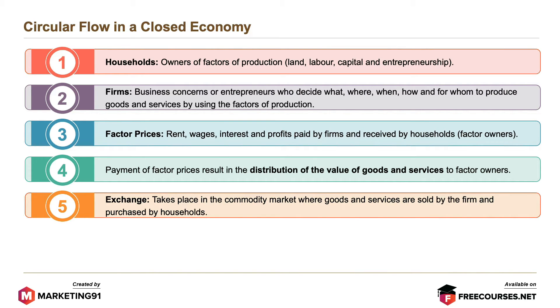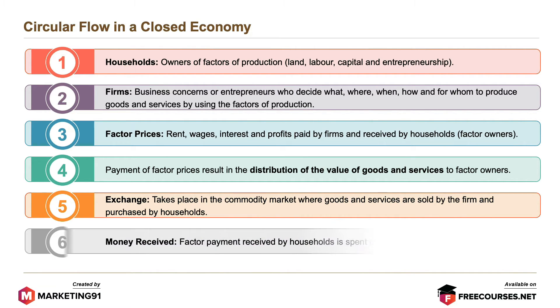Exchange takes place in the commodity market where goods and services are sold by the firm and purchased by households. Money received — factor payment received by households — is spent on purchasing goods and services.